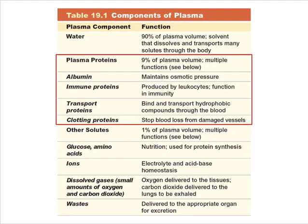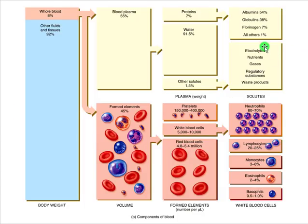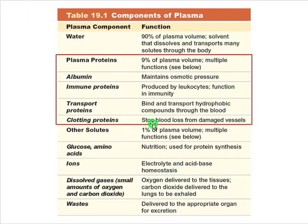Looking at this table, we can talk more about plasma proteins. The first one is albumin — maybe the most famous one. As we cover blood leading into the cardiovascular system, for now let's say that albumin maintains osmotic pressure within the blood. That's really important for maintaining that osmotic pressure.